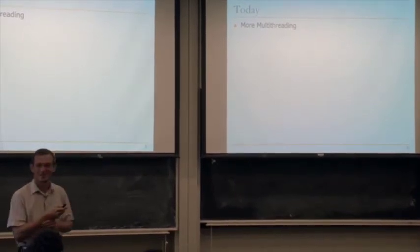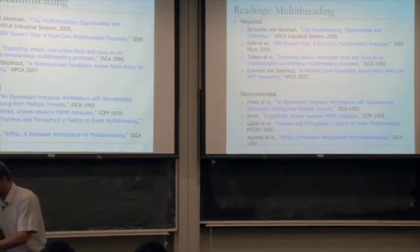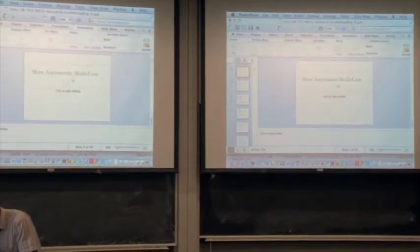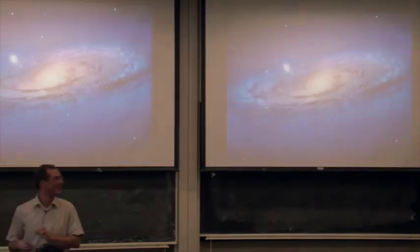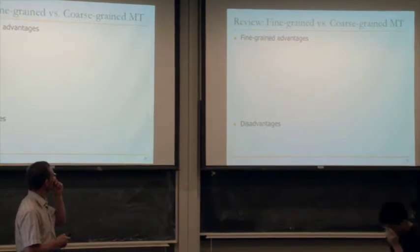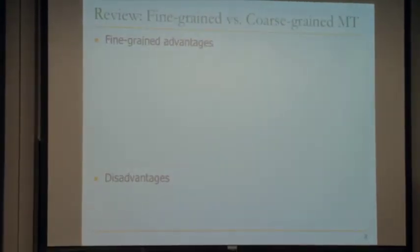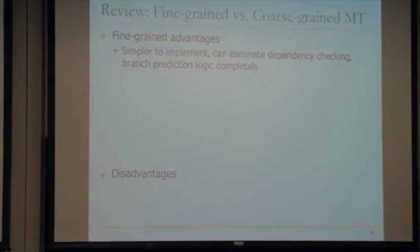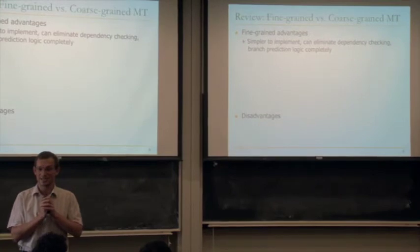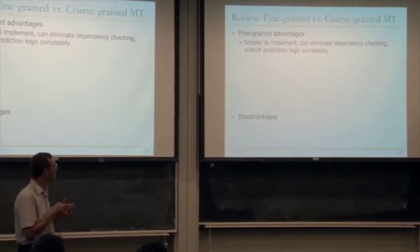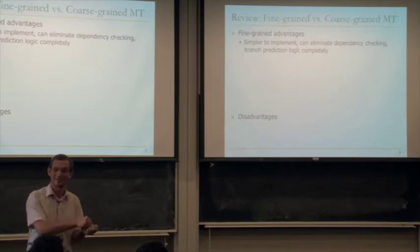Today we'll do more multi-threading. Some of it is on papers you've read. These are some additional readings you should be doing, in addition to the ones you're assigned to review — you're not supposed to review them, but we'll cover some of them. Fine-grained is simpler to implement because you can eliminate a lot of structures, like dependency checking logic and branch prediction logic completely.